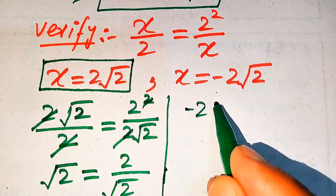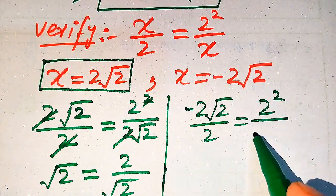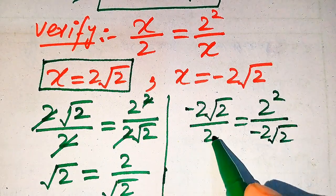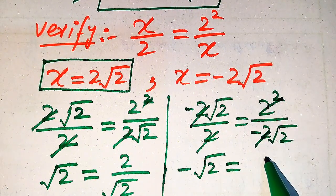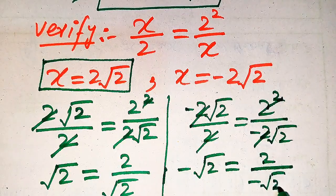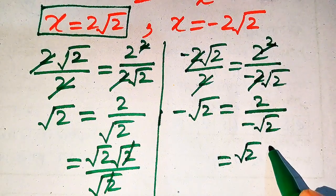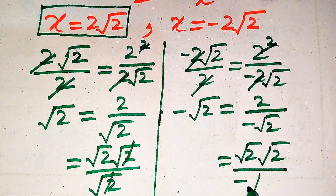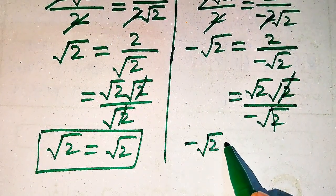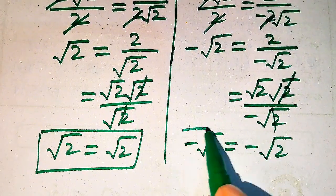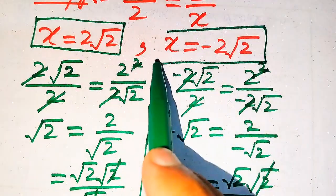Now we verify the negative root. Substituting x equals minus 2 root 2 gives minus 2 root 2 divided by 2 on the left, and 2 squared divided by minus 2 root 2 on the right. The 2s cancel on the left giving minus root 2. On the right, writing 2 as root 2 times root 2 and cancelling, we get minus root 2 equals minus root 2. This confirms the second value of x is also a valid solution.